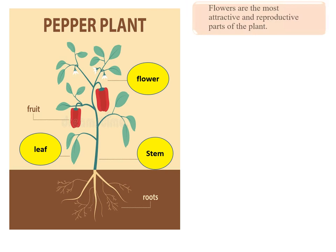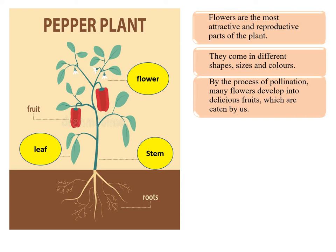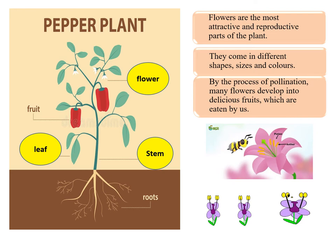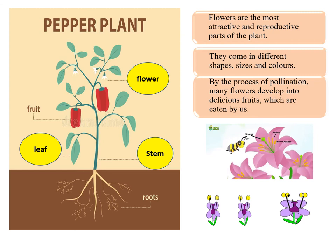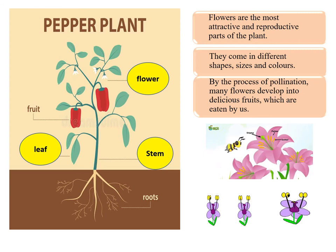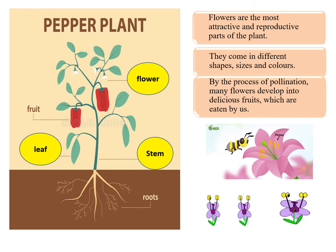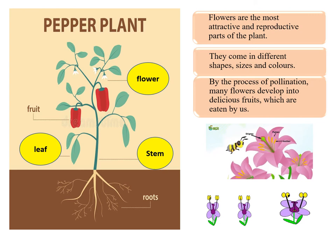The next part is flower. Flowers are the most attractive and reproductive parts of the plant. They come in different shapes, sizes and colors. By the process of pollination, many flowers develop into delicious fruits which are eaten by us. These images are showing you the process of pollination — both self-pollination and pollination between two different flowers by insects. By pollination, flowers develop into fruits.